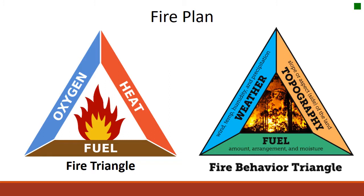When thinking about a prescribed fire we also have to consider the fire behavior triangle, which is also used when thinking about how to suppress wildland fires when they occur naturally. We have to consider weather components like wind, temperature, humidity, and precipitation — all of which influence fire behavior, especially wind. We also consider topography: slope and aspect. And again we think about fuels — how they're arranged and what the moisture content is. As land managers, fuels are the only things we can control.